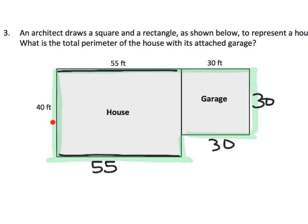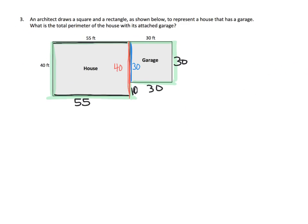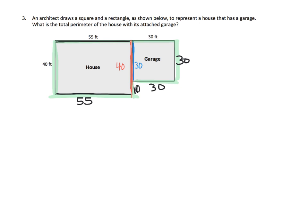That missing length is pretty easy to find. We know this entire length right here — I'll do it in red — is 40. But we know, and I'll do it in blue, that this part right here is 30. So that means this missing piece has to be 10. Now we have all of the lengths we need. Starting at the 10 and going clockwise, we need to add: 10 plus 55 plus 40 plus 55 plus 30 plus 30 plus 30.